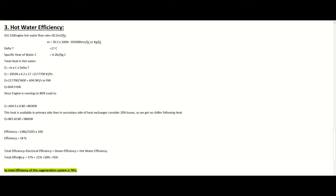Now summing up all efficiencies: electrical efficiency is 37 percent, steam efficiency is 21 percent, and hot water efficiency is 18 percent. So the total efficiency of the cogeneration system is 76 percent. In this video I have used the parameters from my own system. In your case you can put your own parameters for your gas generator to calculate your cogeneration system efficiency very easily. I hope you liked this video — if so, please share your comments and subscribe to my channel. Thank you very much.